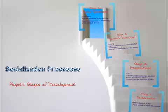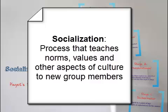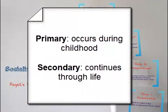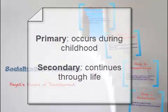We'll take a few minutes now to talk about socialization, specifically in this lecture, Jean Piaget's Stages of Development. Socialization, defined, is the process that teaches norms and values and other aspects of a culture to new group members. There are two kinds of socialization: primary socialization, which occurs during your childhood, and secondary socialization, which occurs throughout your life.